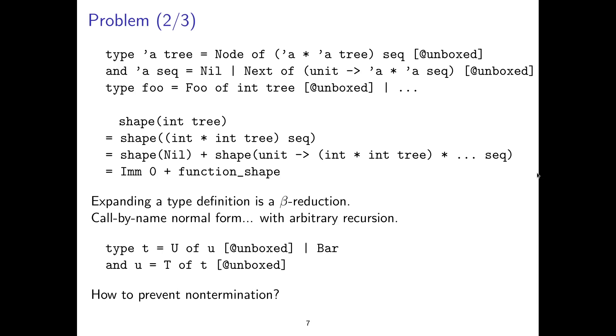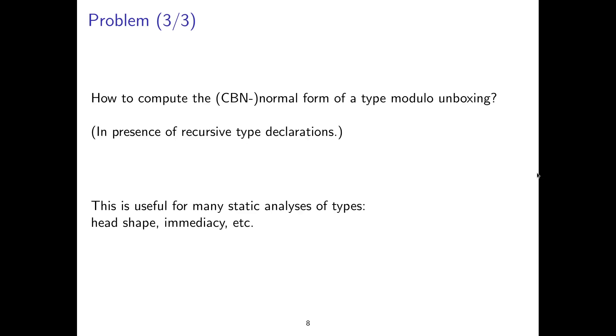And as you probably know, computing a normal form of a term in presence of arbitrary recursion is not – well, some terms do not have a normal form. Some terms loop indefinitely. And a priori, it may not be decidable whether a term terminates. So here is an example, a synthetic example, I'm sorry. So the type T contains an unboxed occurrence of U, and U contains an unboxed occurrence of T. So if I tried to compute the shape of T or U by using this approach of repeated expansion, so at compile time when checking the program, I would loop infinitely. So the question is, how to compute this normal form without looping? Yes. So normal form of a type, modulo type aliases, and these unboxed constructors.